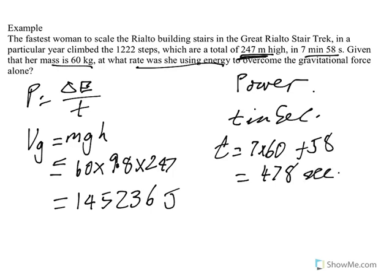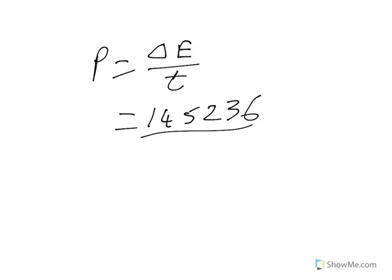And now power is changing energy over time, and the change in energy was 145,236. And the time is 478 seconds, so the power is 303.8 watts when you do all of that on your calculator.